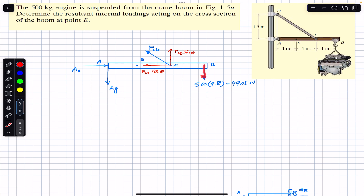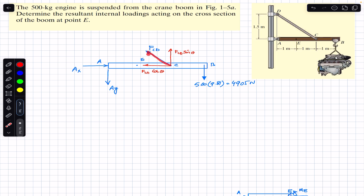At point B, the weight of the engine is acting vertically downward. The mass is given as 500 kg, so the total weight is 500 times 9.81, which equals 4905 Newtons. At point C, the CD rod applies a force FCD on beam AB, making some angle theta with the horizontal axis of the beam.